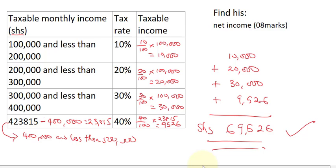To recap: first identify which tax bracket each portion of the income falls into. His taxable income is 423,815 — the first 100,000 is taxed fully at 10%, the next 100,000 at 20%, the next at 30%, and the remaining 23,815 at 40%. Summing up each portion gives 69,526. This is the type of question expected in the UNEP UC math exam.